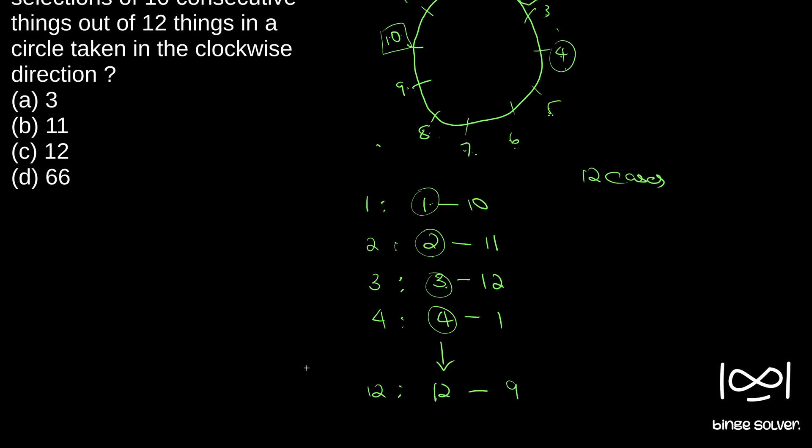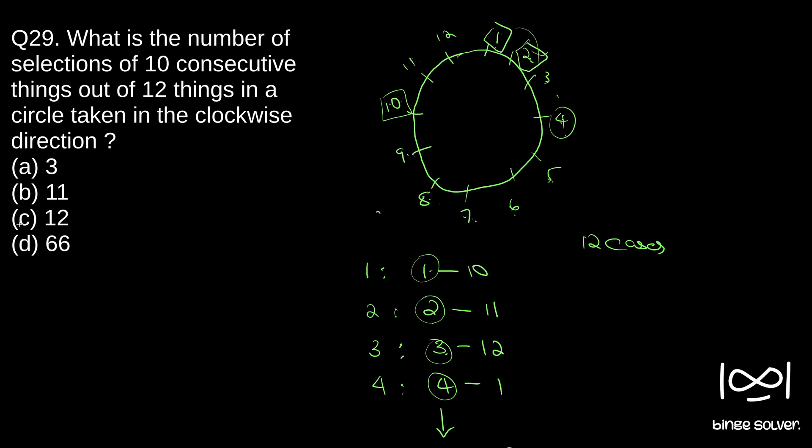So we will have 12 unique cases here. So our solution to question 29 is C, 12. So you should remember one thing. It is not a circular combination case.